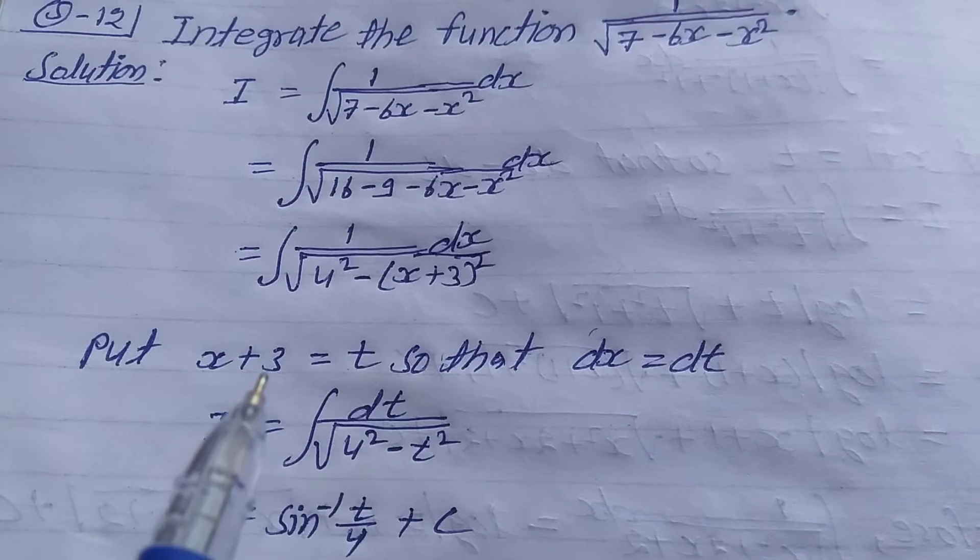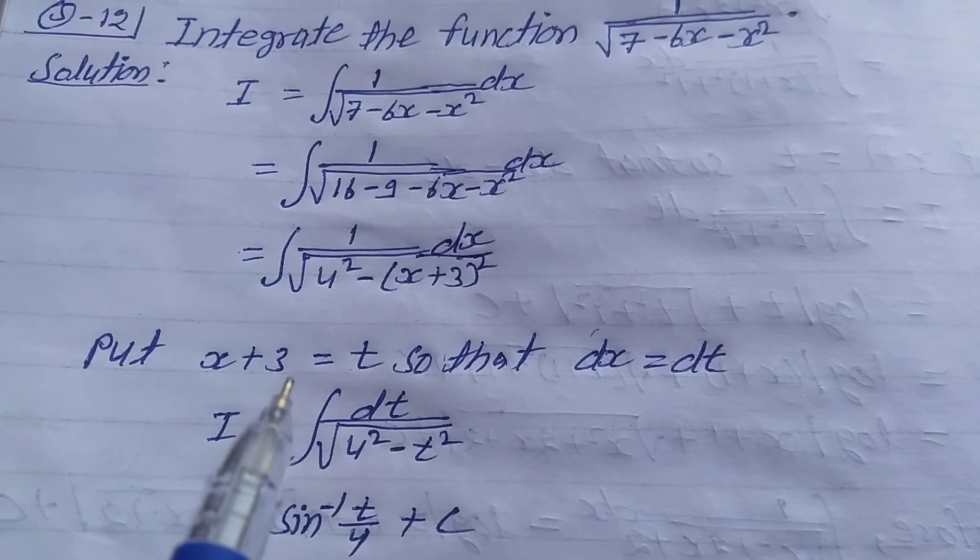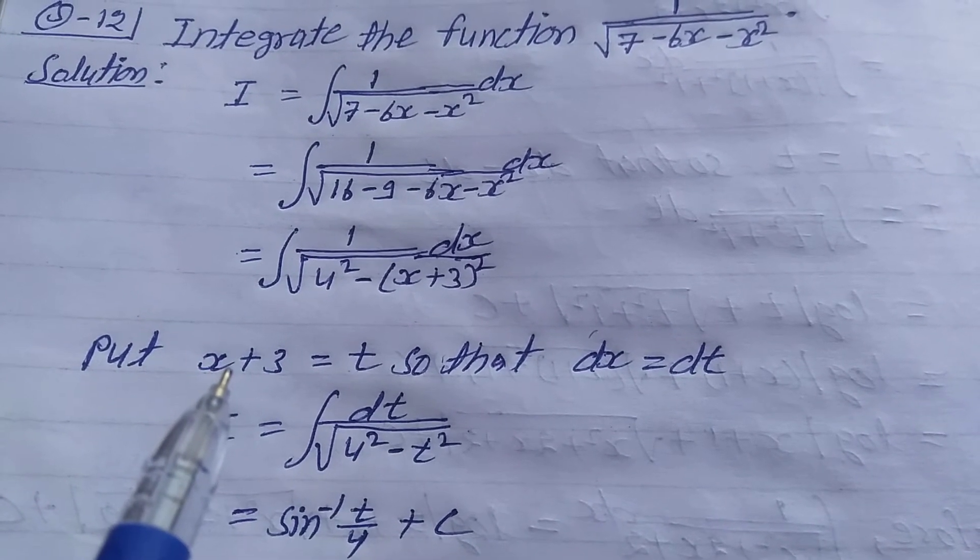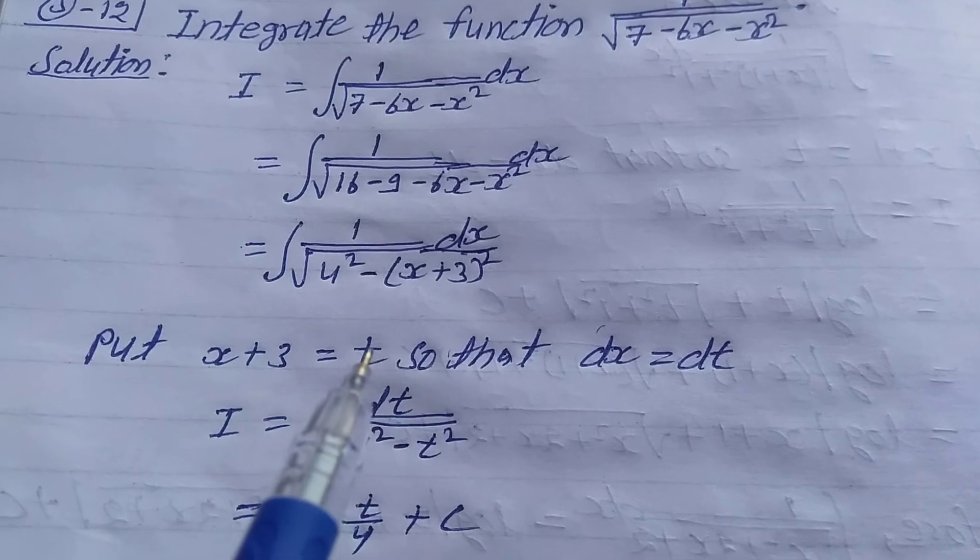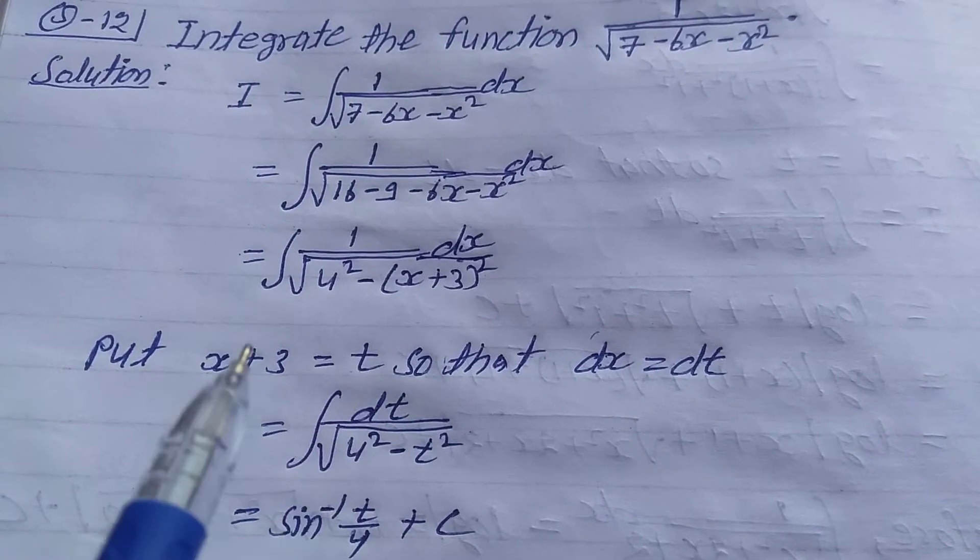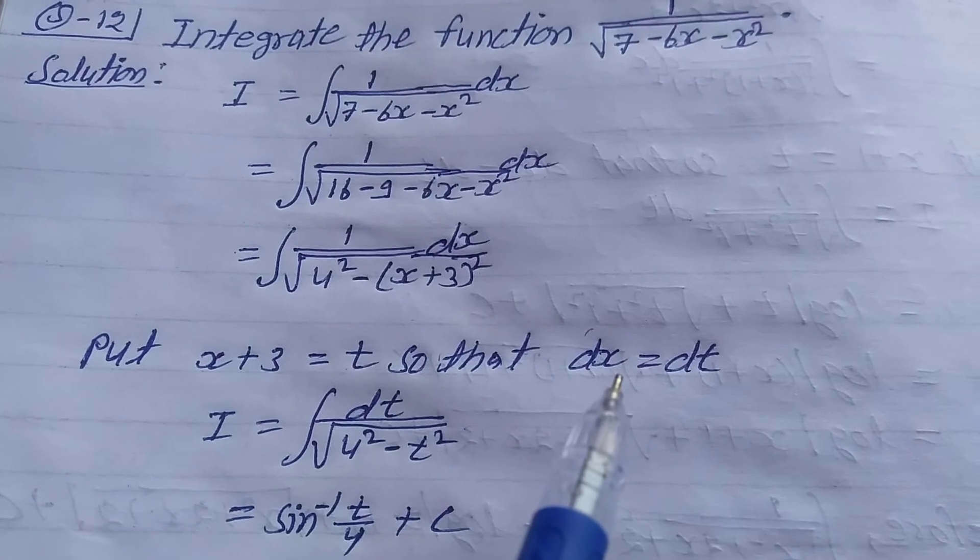Put x plus 3 is equal to t, so differentiate both sides with respect to x. The derivative of x is 1 and 3 is 0, dt is dt upon dx, so dx is equal to dt.